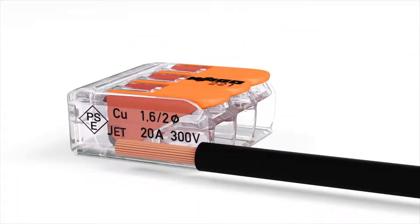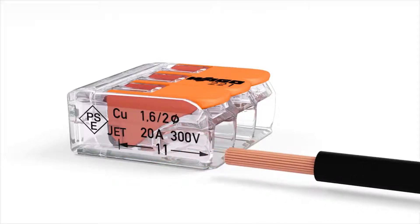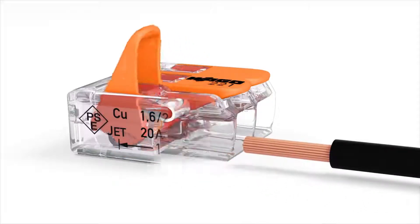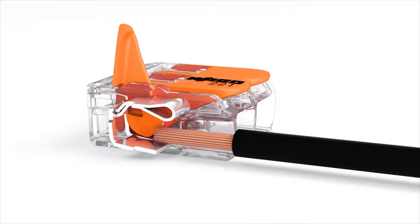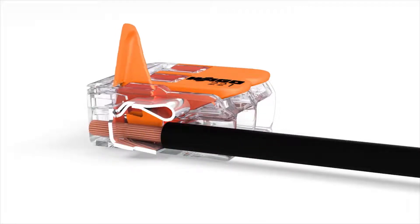Strip the conductor according to the strip length guide printed on the side of the connector housing. Open the clamping unit via the easy to use orange lever. Insert the stripped conductor, then lower the lever to close the clamp.